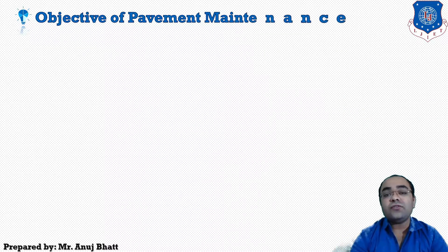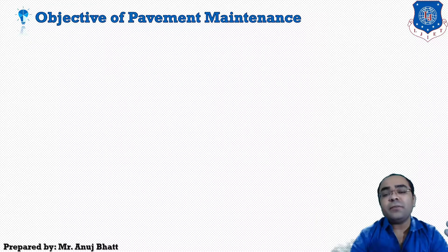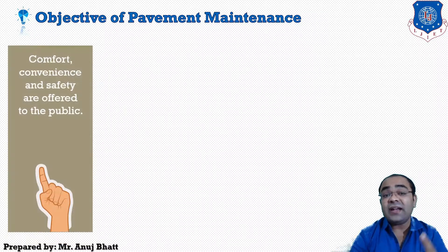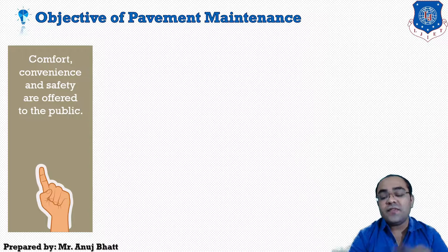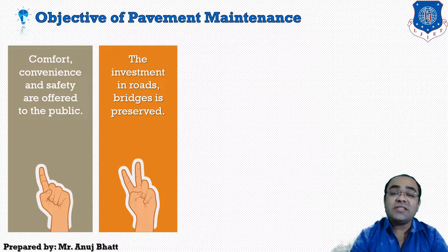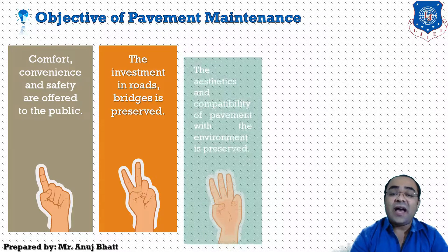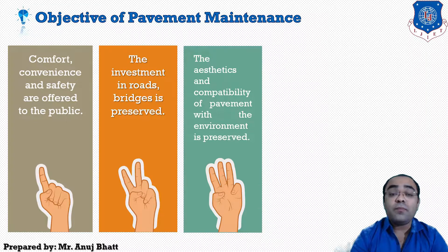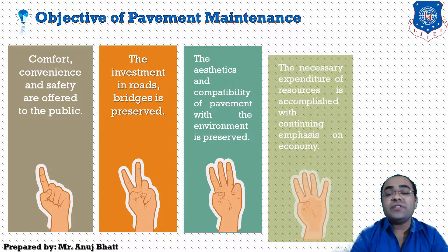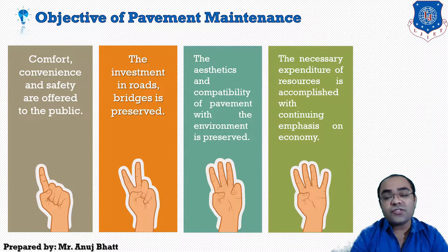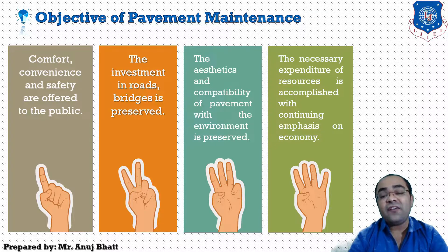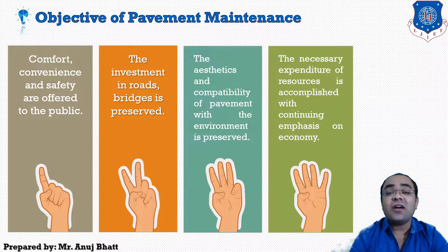The next is the objective of pavement maintenance. The basic objectives are: first, to maintain and operate the pavement so that it provides comfort, convenience, and safety to the public. Second, the investment in roads and bridges is preserved. Third, the aesthetic compatibility of pavement with the environment is preserved. Fourth, the necessary expenditure of resources is accomplished with continuing emphasis on economy of the transportation systems.